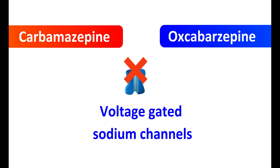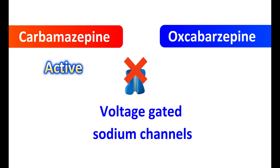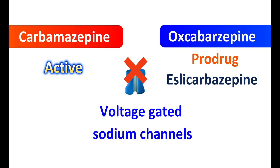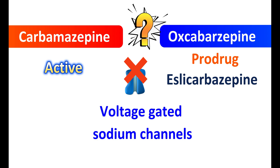They can also modulate the mood swings in people with bipolar disorder. Even though they produce the same action on the body, they are not acting in a similar way. Carbamazepine is an active drug that does not require any bioactivation in the body. However, oxcarbazepine is a prodrug that is metabolized in the body, and one of its active metabolites is S-licarbazepine, which is better at blocking voltage-gated sodium channels. Both medications are similar except in that carbamazepine is an active drug whereas oxcarbazepine is a prodrug.